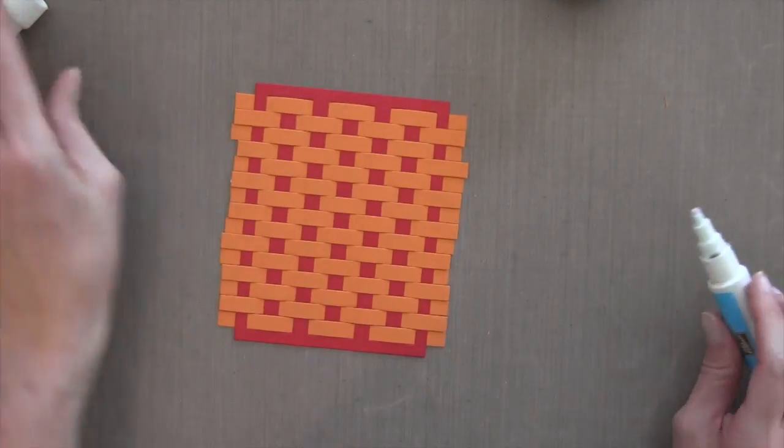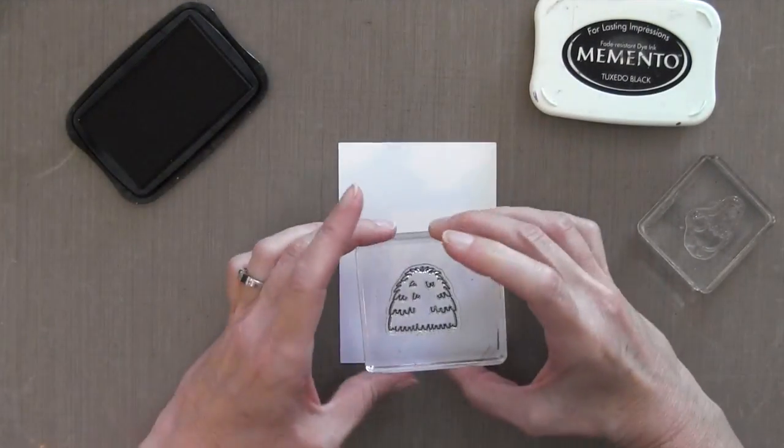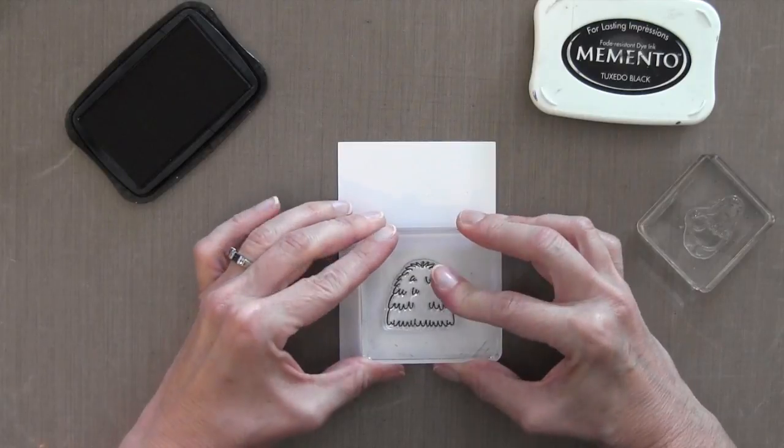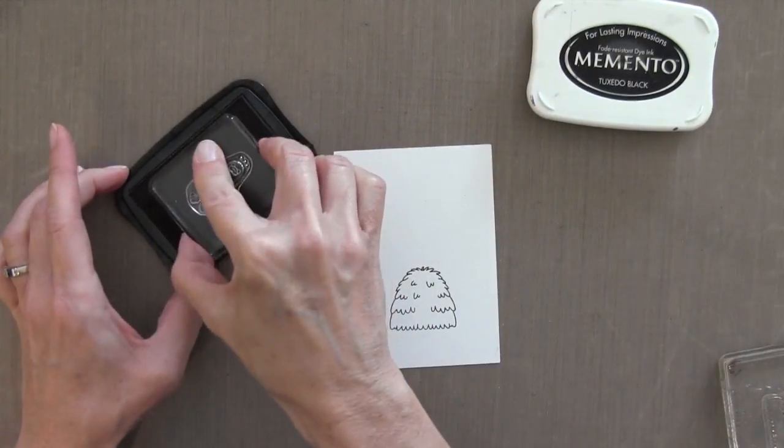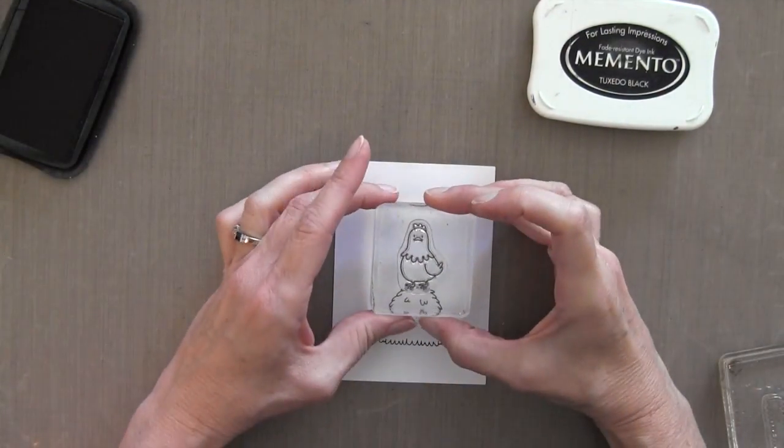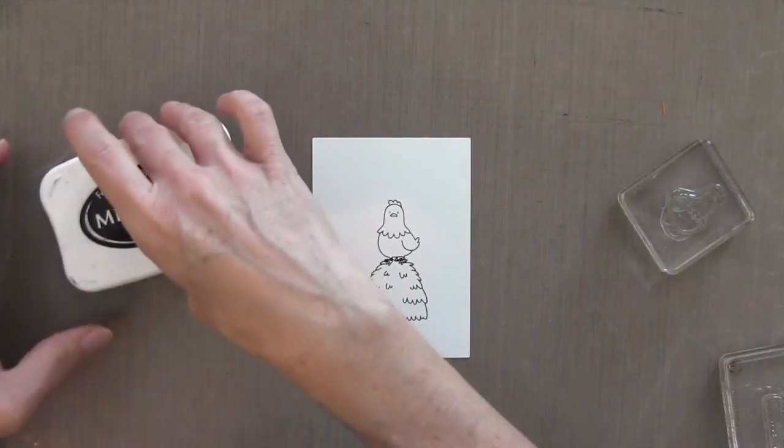So you can see here they're all adhered. So I'm going to put that off to the side to dry and I'm going to work on my chicken. I'm going to stamp the stack of hay and the chicken in memento tuxedo black ink because I'm going to be coloring them with Copics.